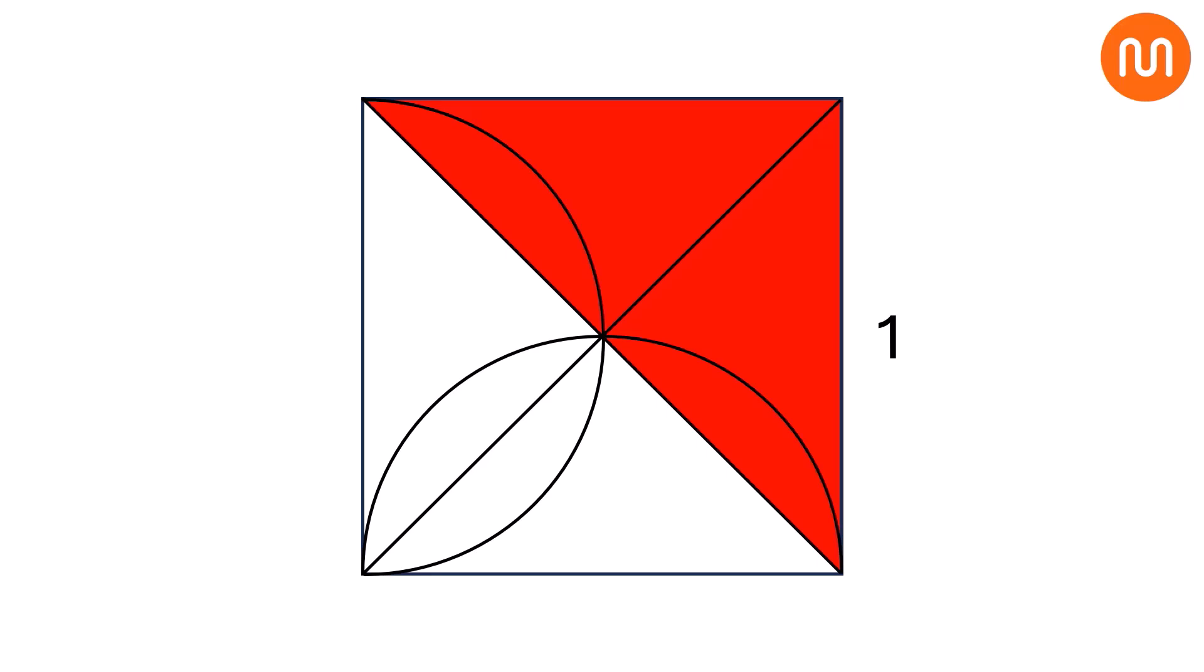Notice something interesting? We can clearly see that the red area is exactly half of the square because it fills the area above the diagonal.